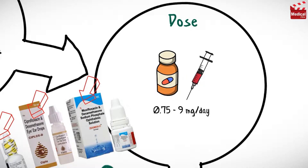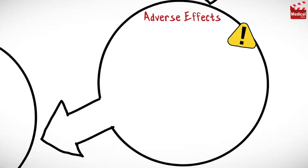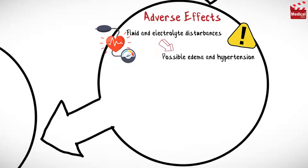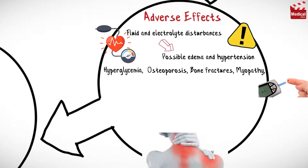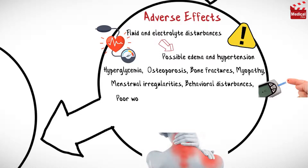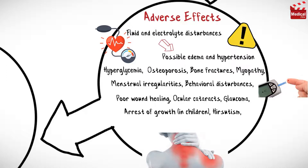Side effects of systemic use of dexamethasone include fluid and electrolyte disturbances with possible edema and hypertension, hyperglycemia, osteoporosis, bone fractures, and myopathy, menstrual irregularities, behavioral disturbances, poor wound healing, ocular cataracts and glaucoma, arrest of growth in children, hirsutism, and Cushing-like syndrome.